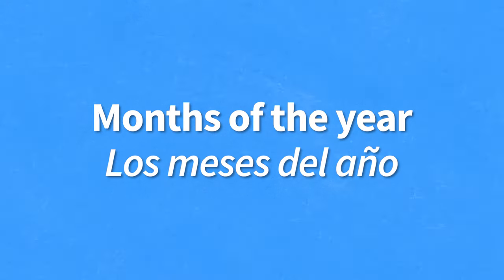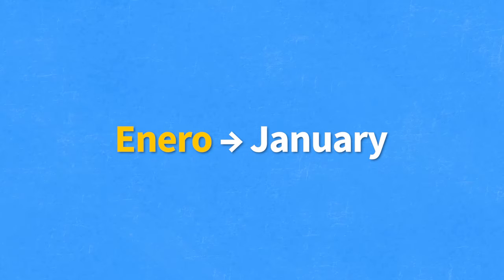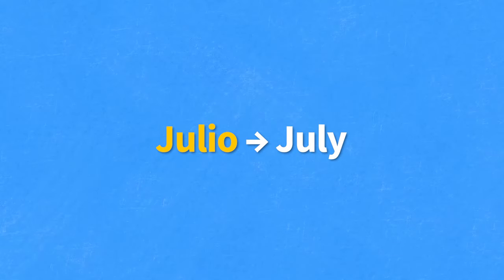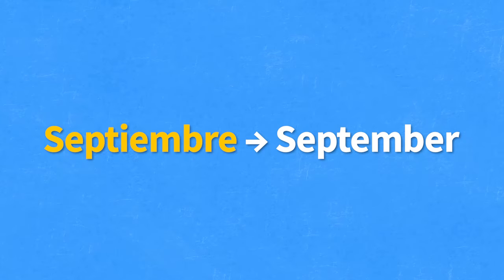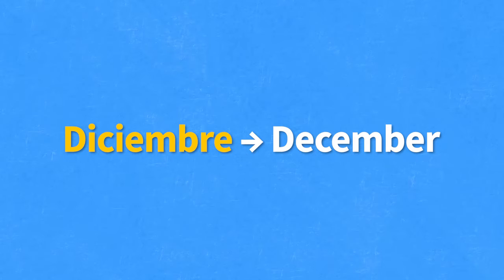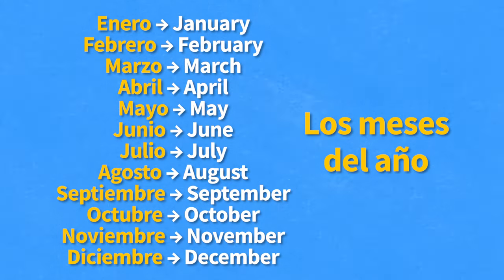Let's now review the months of the year in Spanish — los meses del año en español. Enero — January. Febrero — February. Marzo — March. Abril — April. Mayo — May. Junio — June. Julio — July. Agosto — August. Septiembre — September. Octubre — October. Noviembre — November. Diciembre — December. These are the months of the year in Spanish, los meses del año.